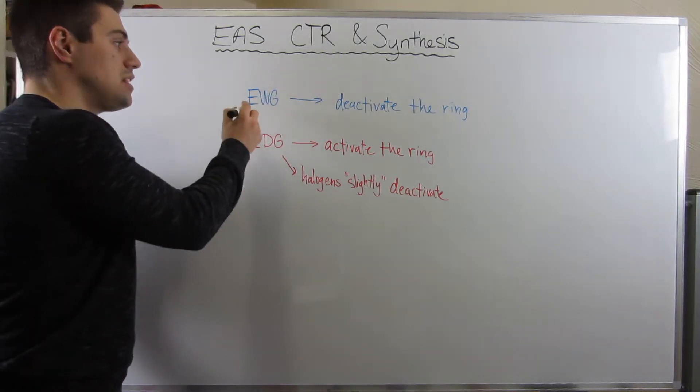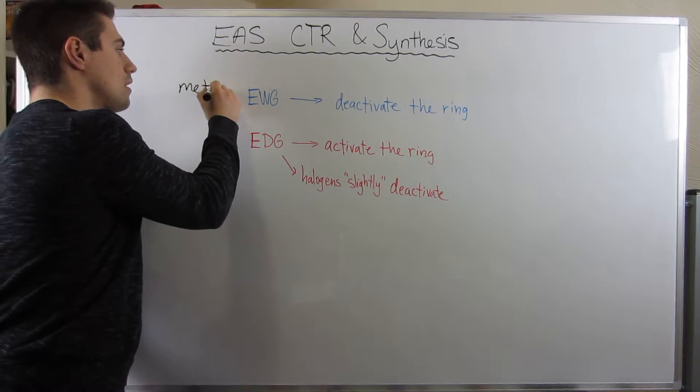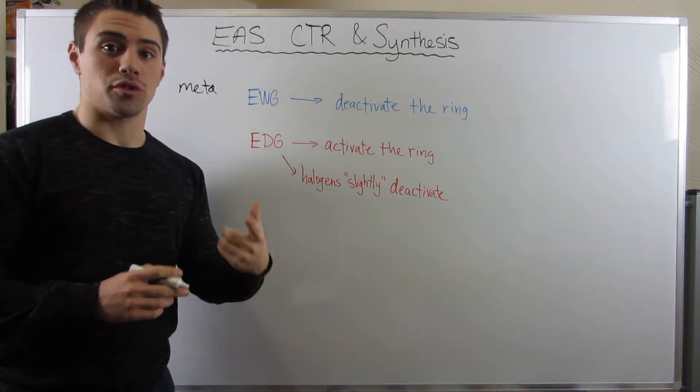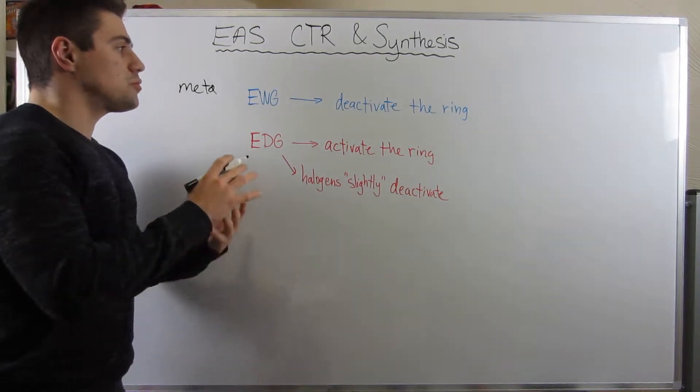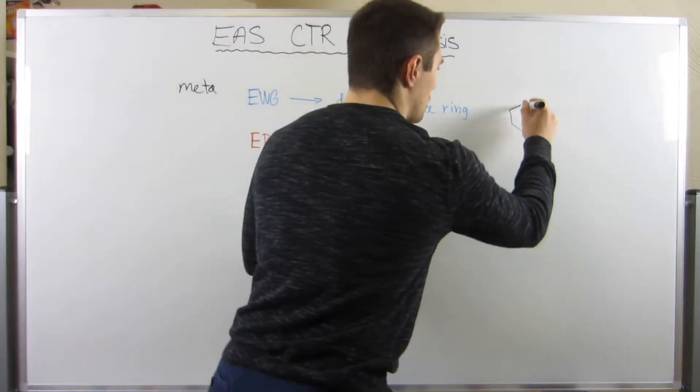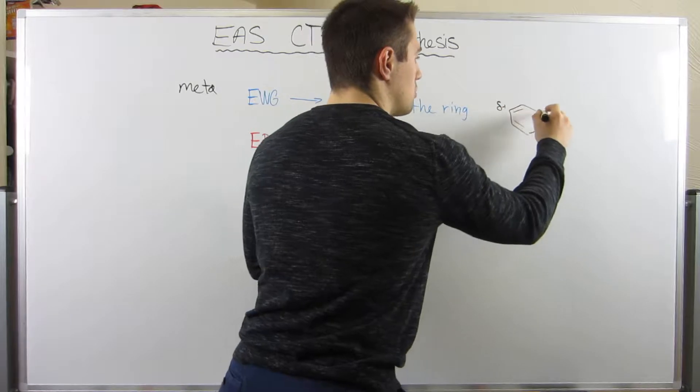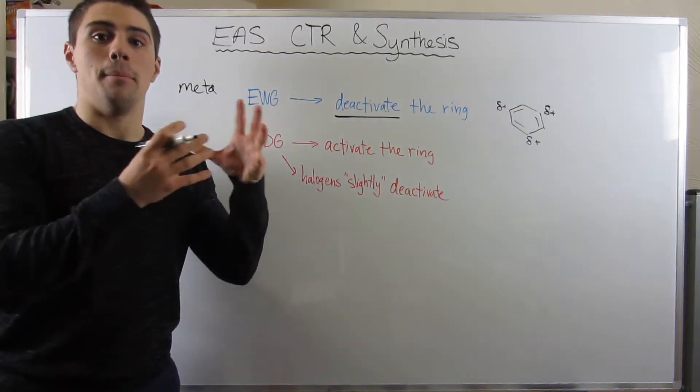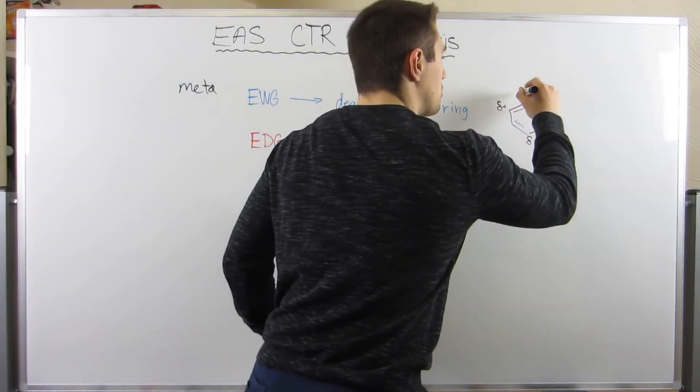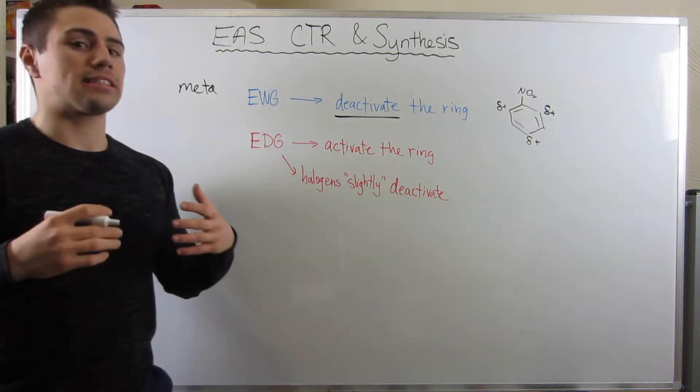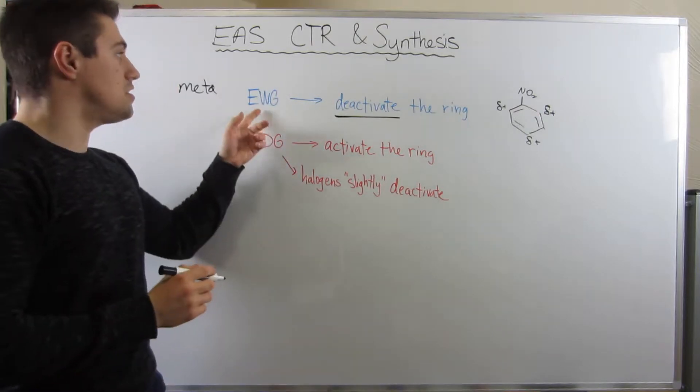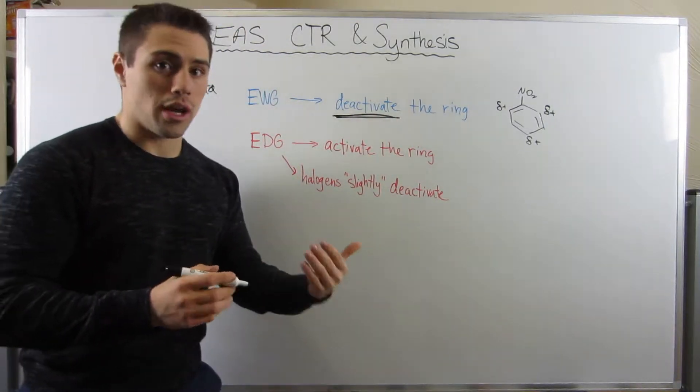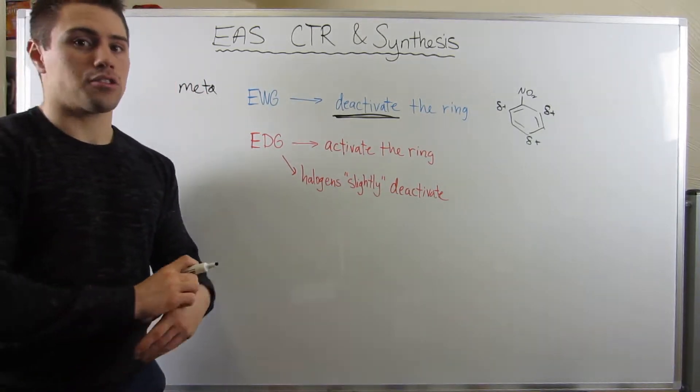Okay, so we discussed with EWGs, a.k.a. Meta directors, that these are those very positive or partial positive atoms directly attached to your benzene ring, like the nitrogen in the nitro group, or the sulfur in the sulfonyl group. Because we saw in the resonance that they actually put positive charges on the benzene ring, on the two Ortho and one Para position, these groups actually deactivate the ring. Subsequent reactions are slower and more unfavorable than if you have these groups.